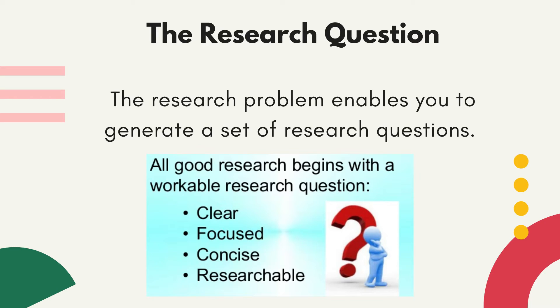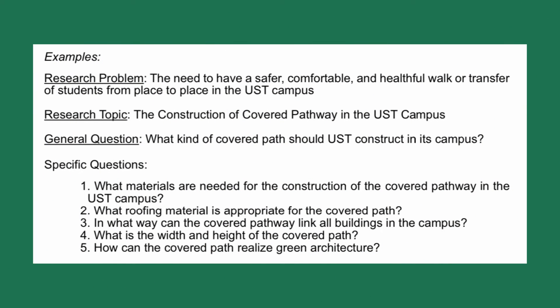For example, your research problem is your need to have a safer, comfortable, and healthful walk or transfer of students from place to place in the UST campus. Your research topic is the construction of a covered pathway in the UST campus. You must have your general question — for example: What kind of covered path should UST construct in its campus?